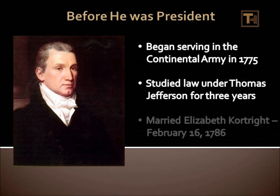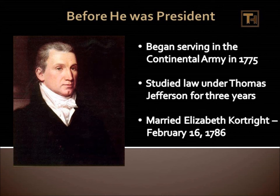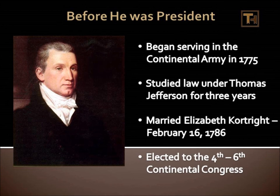In 1786, Monroe married Elizabeth Courtright. Together they had three children named Eliza, James Spence, and Maria Hester. He was also elected to the Fourth Continental Congress in 1783, followed by the Fifth Continental Congress and the Sixth Continental Congress.